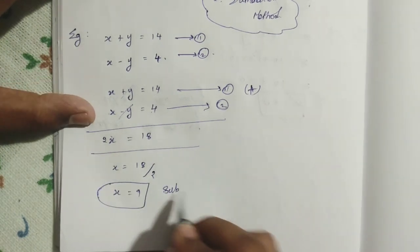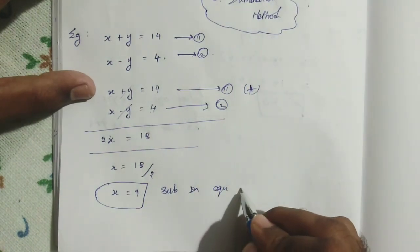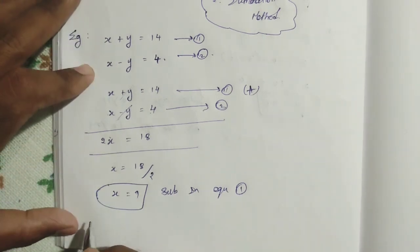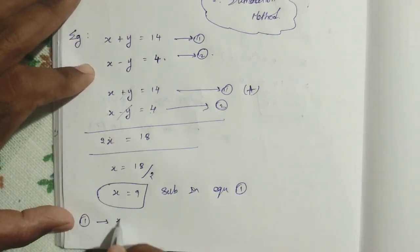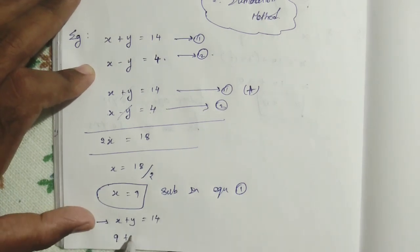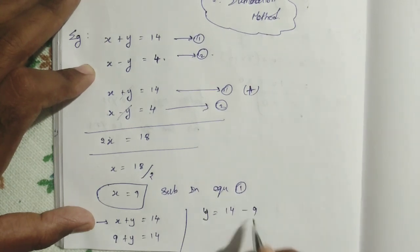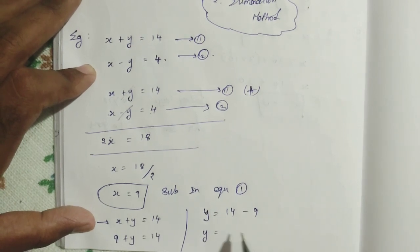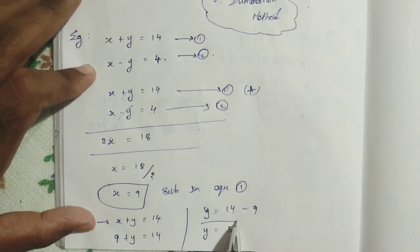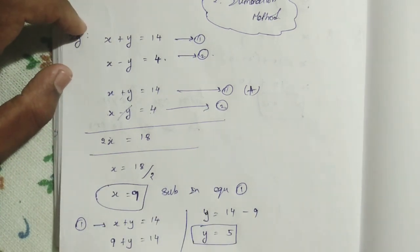Now we substitute x equals 9 into any equation. Using equation number 1: x plus y equals 14, we get 9 plus y equals 14. Therefore y equals 14 minus 9, which equals 5. So we have found the solutions: x equals 9 and y equals 5.